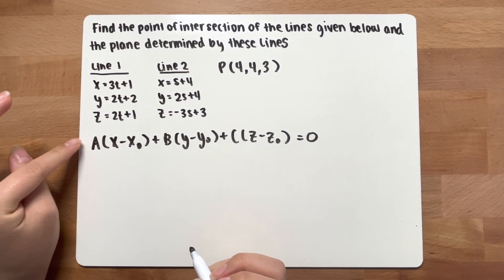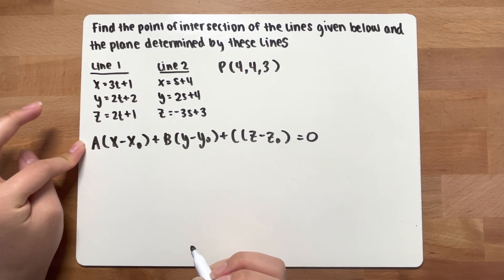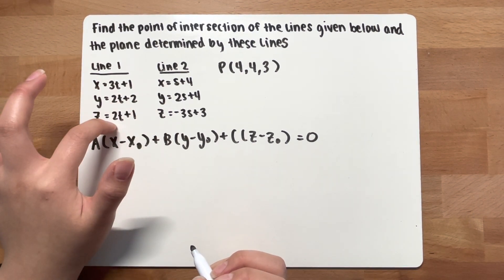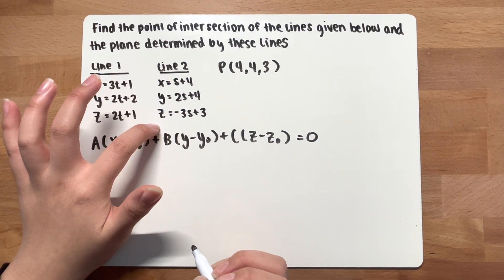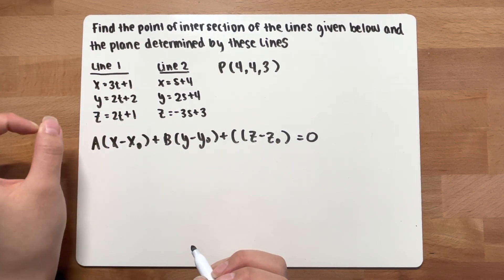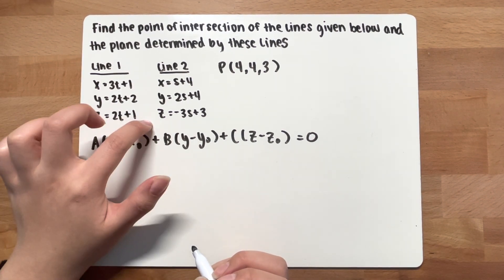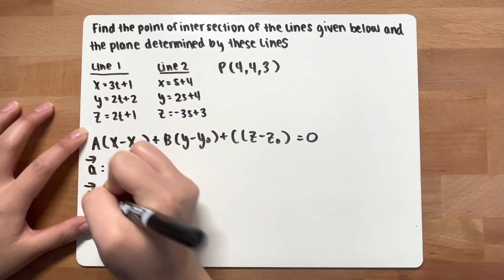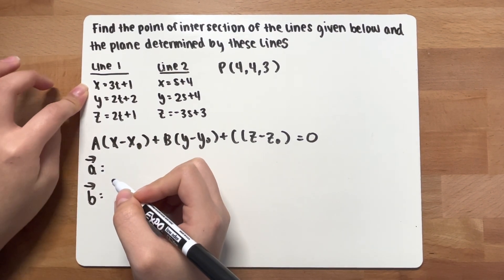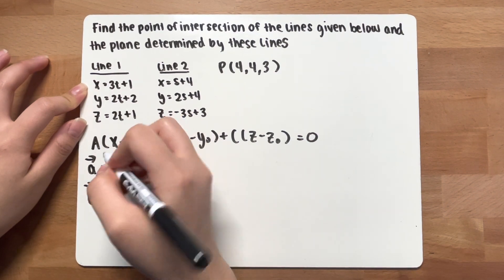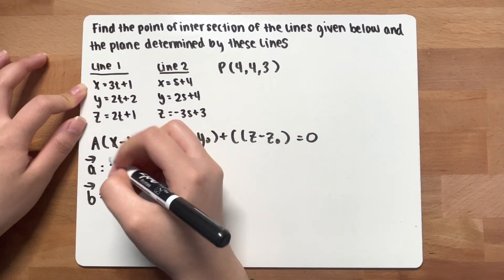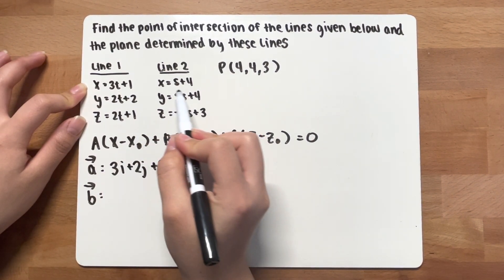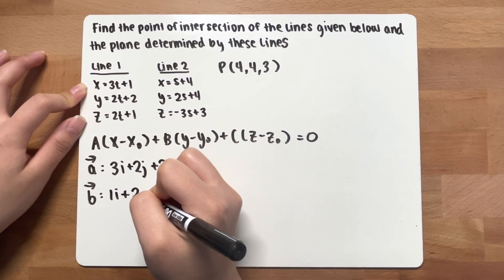In order to find the equation of a plane, you need a vector and a point. Right now you have two lines, and you want to make a vector using the cross product of their direction vectors. Vector a for line 1 uses the t-coefficients: 3i + 2j + 2k. Vector b for line 2 uses the s-coefficients: 1i + 2j - 3k.